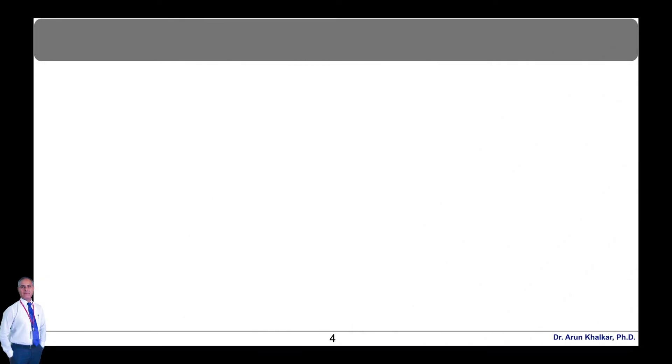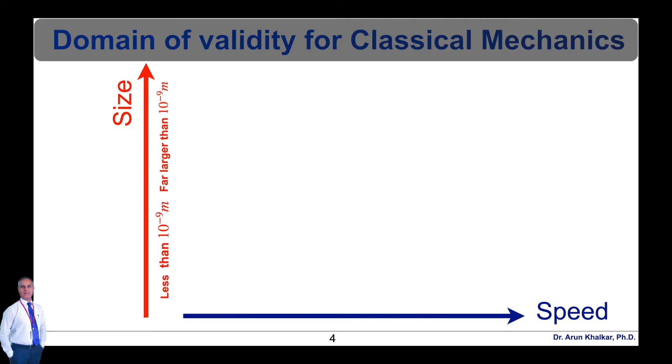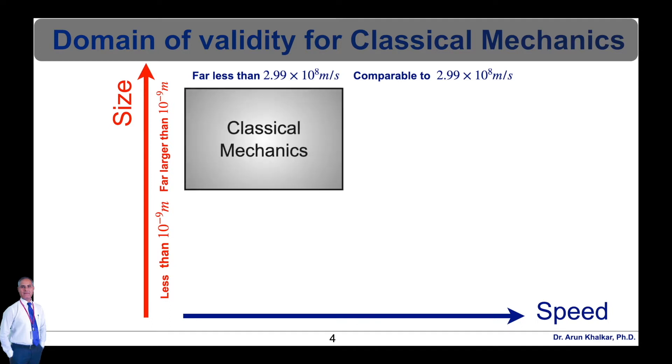Now let's see the domain of validity for classical mechanics. The domains of validity are shown in this figure: classical mechanics with size far larger than 10 raised to minus 9 meter and with speed far less than 2.99 × 10 raised to 8 meter per second.